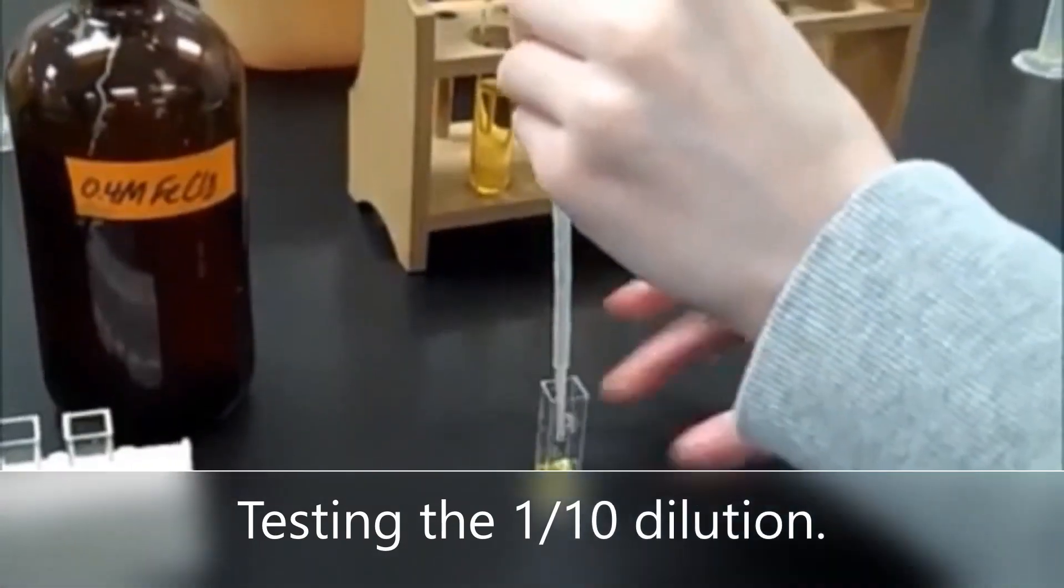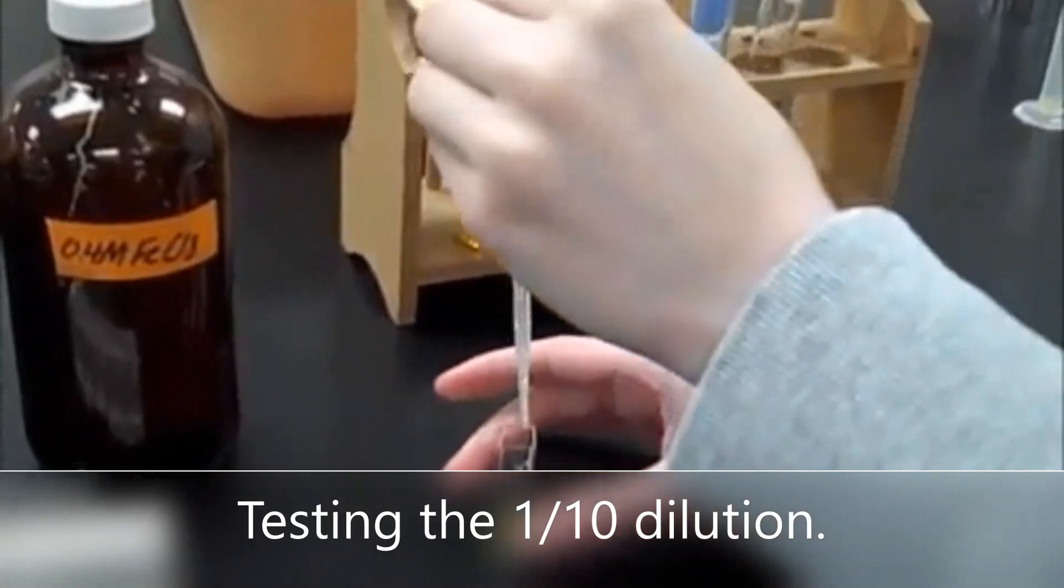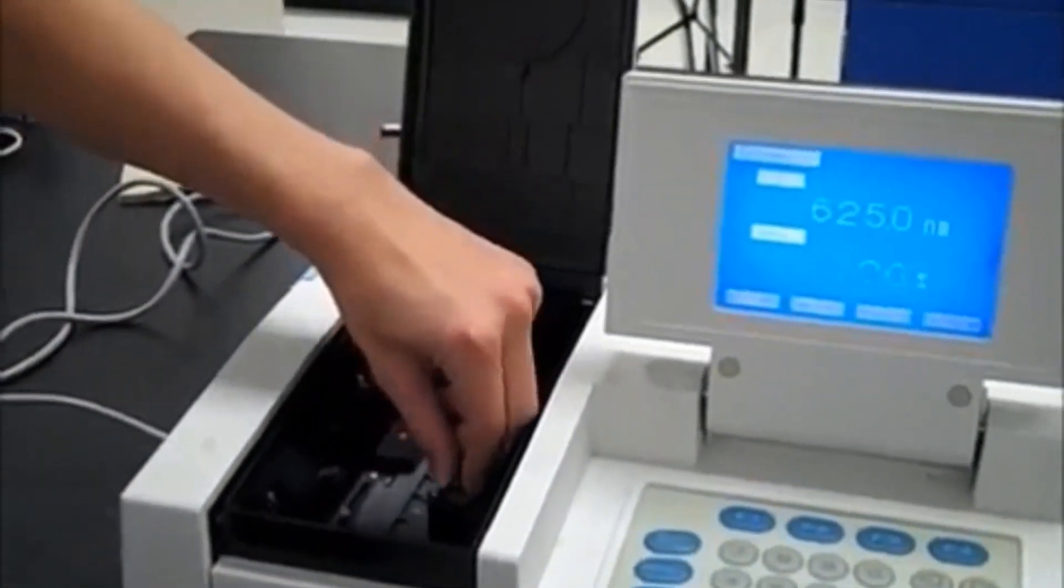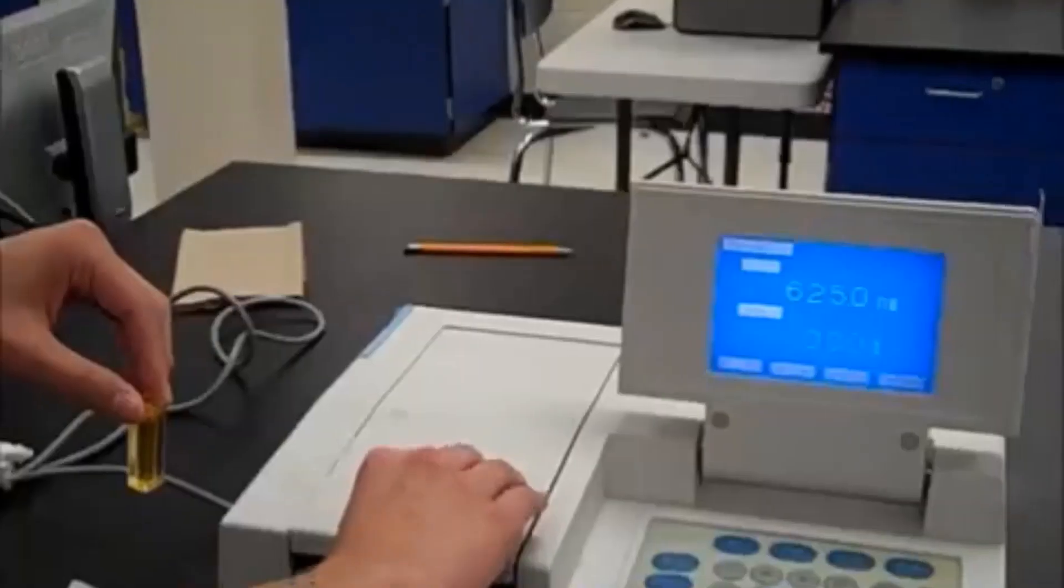Each sample will be tested to determine its percent transmittance. First we see testing of the 1 to 10 dilution. The transmittance for the one-tenth dilution worked out to be 97.1 percent.